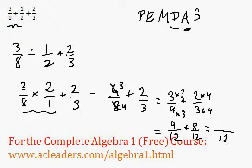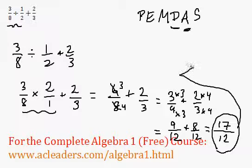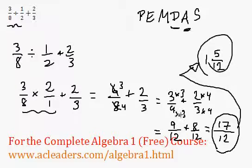Now we have everything over 12. 9 plus 8, 17. 17 over 12 is the final answer. We could make that equivalent to 1 and 5 over 12. That's it.